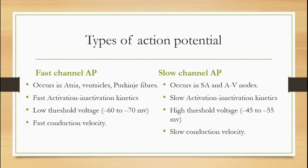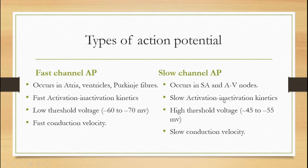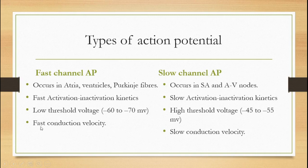Fast channel action potentials are found in atrial and ventricular fibers. Slow channel action potentials are found mainly in the sinoatrial node and atrioventricular node. Fast channels are so called because they have fast activation and inactivation kinetics. Slow channels have slow activation and inactivation kinetics. The threshold for fast channels is minus 60 to minus 70 millivolts, while for slow channel pacemaker cells the threshold is higher, at minus 45 to minus 55 millivolts. The SA node and AV node are classified as slow channel action potential cells.